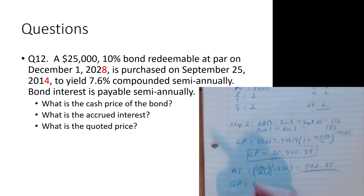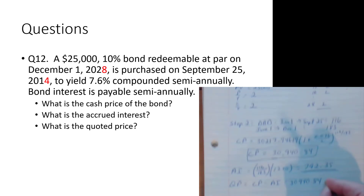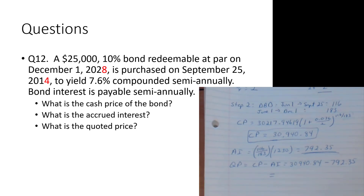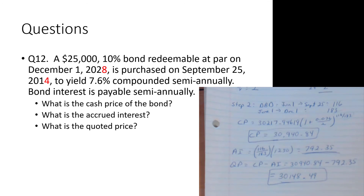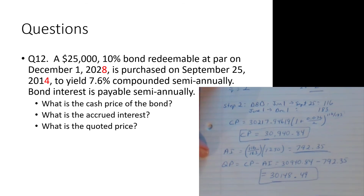The quoted price equals the cash price minus the accrued interest: $30,940.84 minus the accrued interest. This is the value you'll see quoted on services like Morningstar, reflecting the bond's value without the accrued interest — which could otherwise imply more value than is really there. The cash price of approximately $30,940.84 is the most important part since that's how much you actually pay, but keep track of all three values in case you encounter them in the real world.